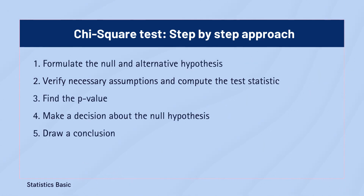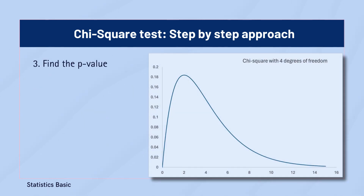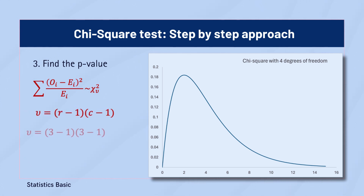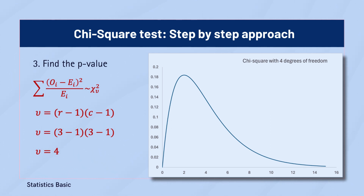The next step of the hypothesis test is to calculate the p-value. For that, we require the degrees of freedom value. Under the null hypothesis, the chi-square statistic follows a chi-square distribution with (r − 1) × (c − 1) degrees of freedom, where r is the number of row categories and c is the number of column categories in the contingency table.